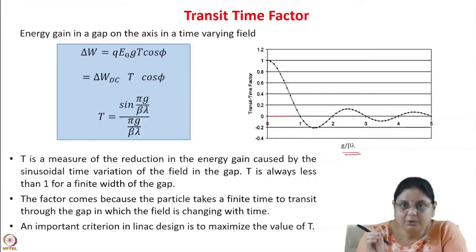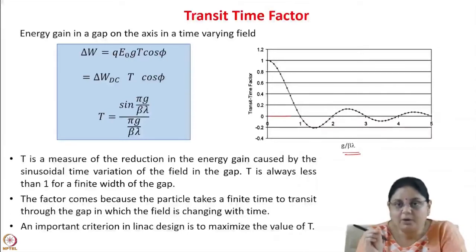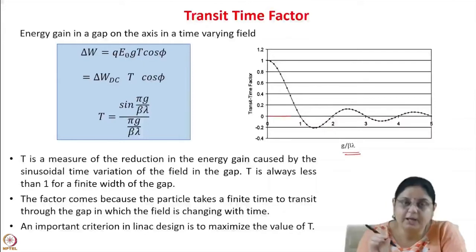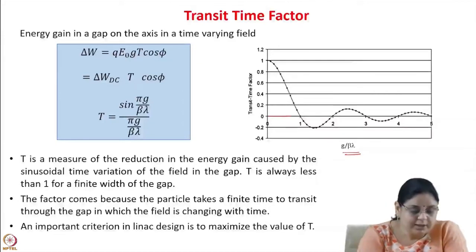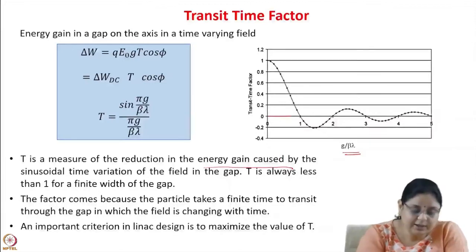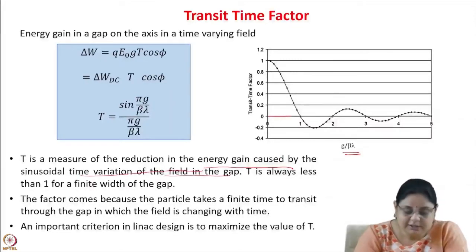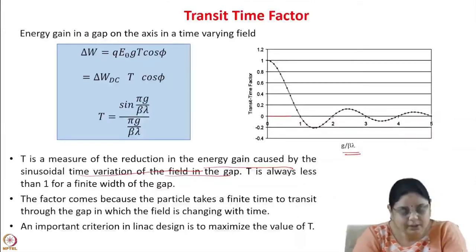You have to have a proper compromise. If you make the gap too small, there could be breakdown — the electric field locally could be very high. So you have to optimize what value of transit time factor to choose. T is a measure of the reduction in the energy gain caused by the sinusoidal time variation of the field in the gap. T is always less than 1 for a finite width of the gap.